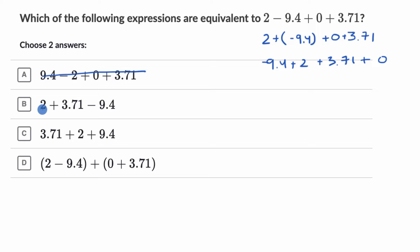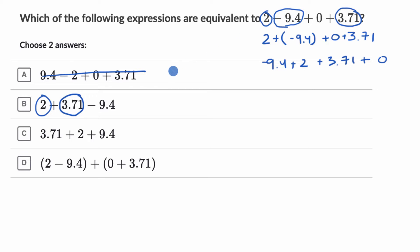Now this second choice: we have a two, we have a 3.71, and both of those things are just being added. And from that we are subtracting 9.4. You have to be very careful with subtraction — we wouldn't want to make it 9.4 minus something else. But as long as we are only subtracting the 9.4, the swapping of order works. You could do two plus 3.71 minus 9.4. So I like this choice.